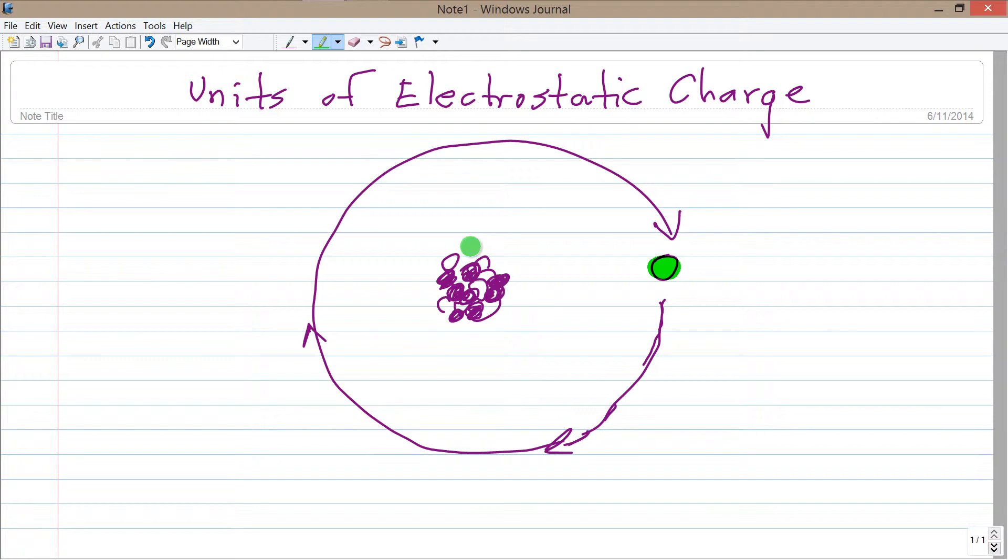What we're looking at here is a very simple model of the atom called the Bohr model. The Bohr model has electrons, like this little green thing, just one of which is shown here, orbiting around the nucleus which is this clump of thingies in the center.